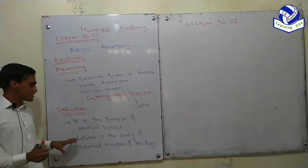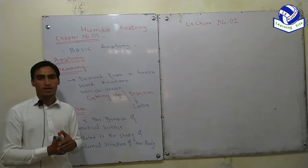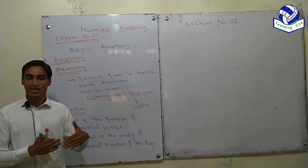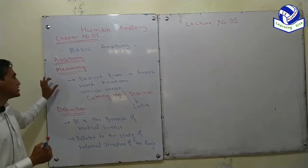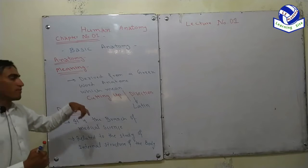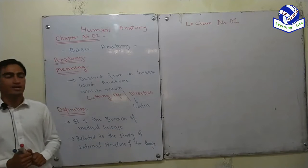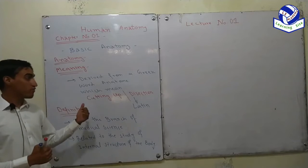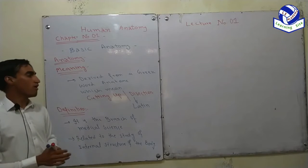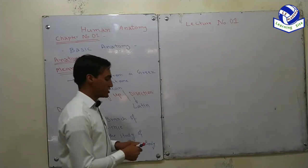How can we define anatomy? Anatomy is the branch of medical science related to the study of the internal structure of the body. So anatomy is derived from a Greek word 'anatome' which means cutting up or dissection. Anatomy is a Greek word while dissection is a Latin word. Dissection may be equal to anatomy but not a synonym to anatomy, because dissection is a mere technique while anatomy is a wide field of study. This covers the meaning and definition of anatomy.